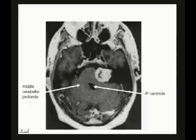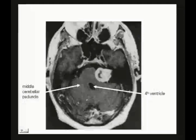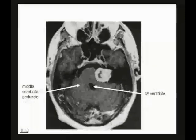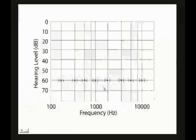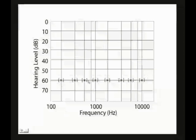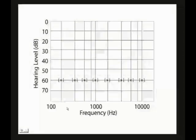Here's the lesion — look at the fourth ventricle displaced and things pushed around. Here's the right middle cerebellar peduncle, the base of the pons, and a big tumor at the fourth ventricle. The audiogram shows sensorineural hearing loss — she lost 75% of her hearing. In a Weber test, she'll localize the tuning fork to her good ear. In the Rinne test, air will be better than bone, but certainly reduced.